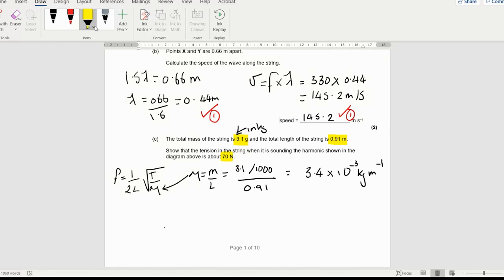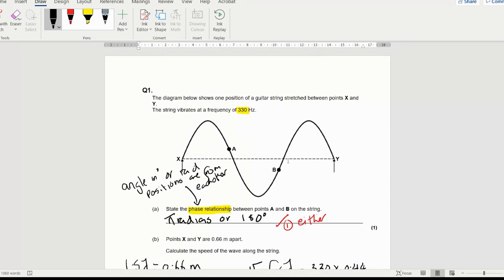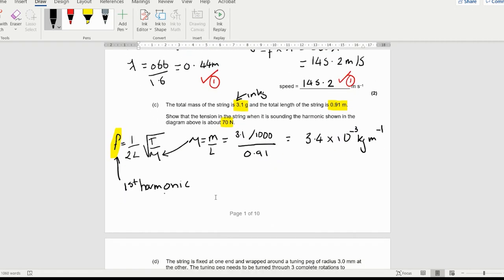When you're doing the first harmonic formula, this is the frequency for the first harmonic. Currently what you have up here, if I scroll up, this is the third harmonic. You've got one, two, three. It's the third harmonic and it has a frequency of 330 hertz. For the first harmonic, the third harmonic has a frequency of 330 hertz, so the first harmonic is going to be 110 hertz.